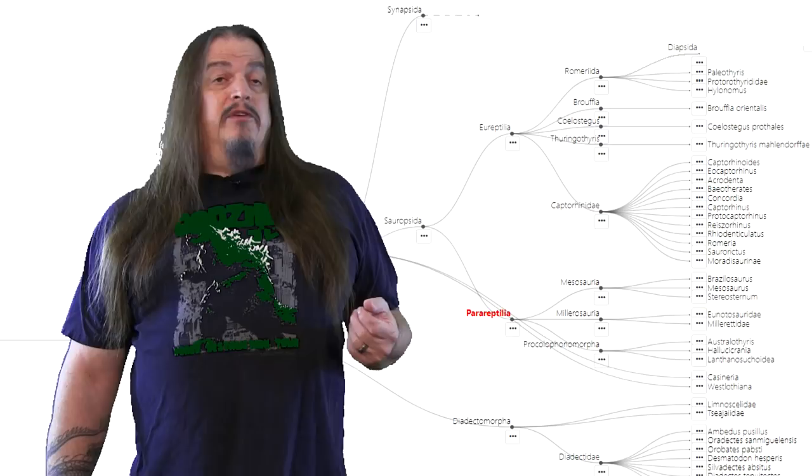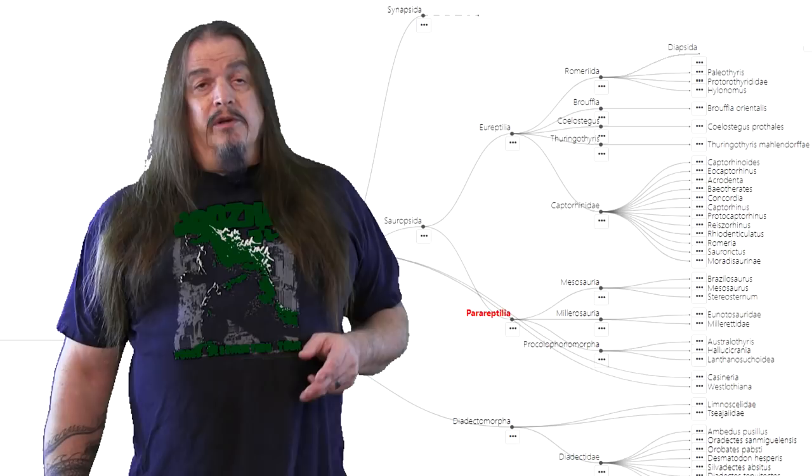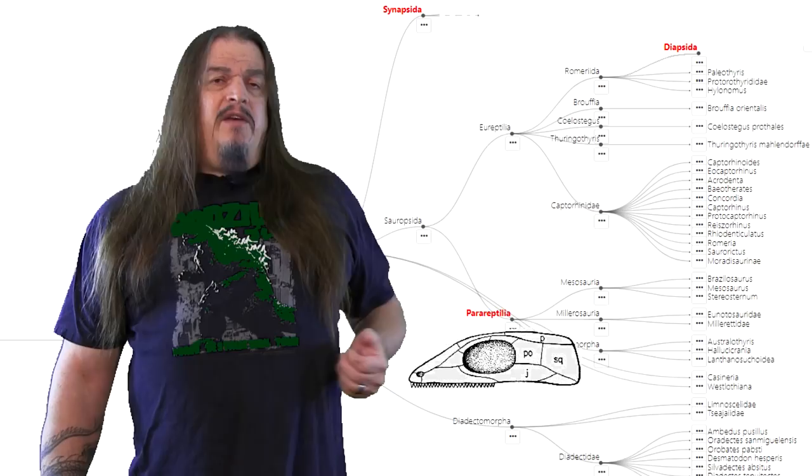Part of the problem is para-reptiles, also known as anapsids. See, in a sense, all these divisions really boil down to the three most important groups: anapsids, synapsids, and diapsids.